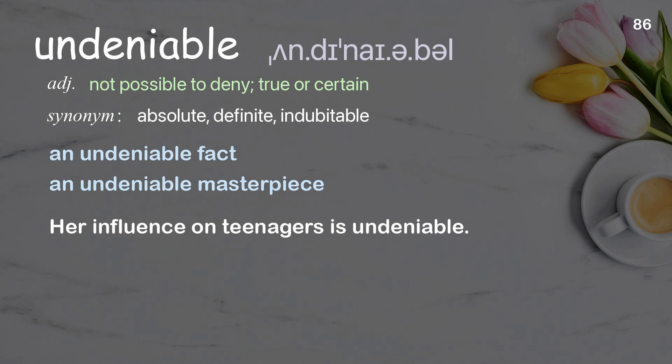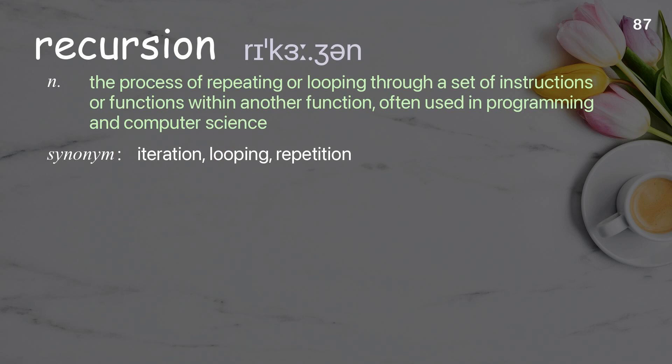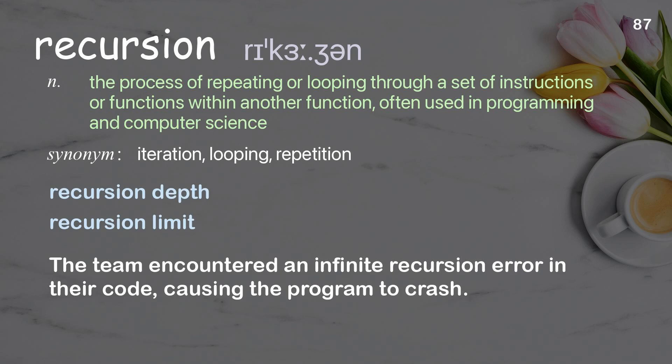Recursion: the process of repeating or looping through a set of instructions or functions within another function, often used in programming and computer science. Examples: recursion depth, recursion limit. The team encountered an infinite recursion error in their code, causing the program to crash.